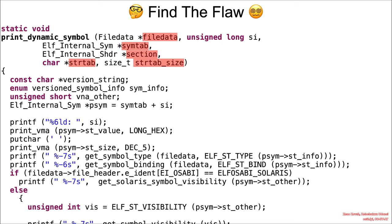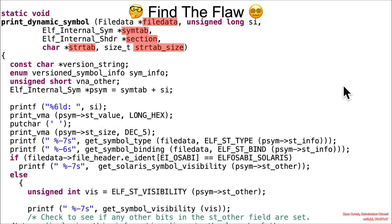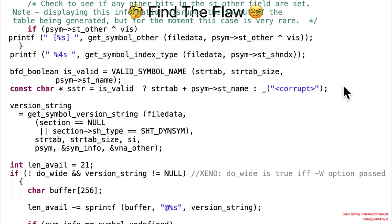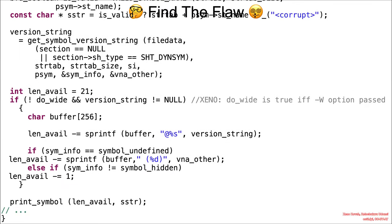So what is the vulnerability? We need to find the flaw. We've got a whole bunch of tainted data coming into this function, print_dynamic_symbol. Go ahead and check it out and see where it's used.